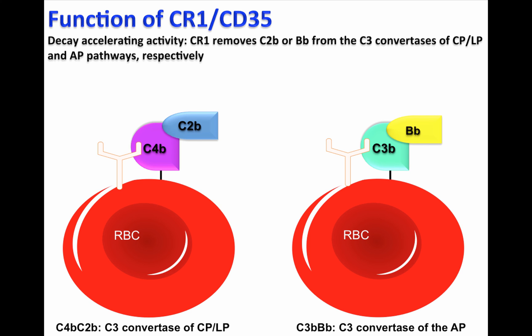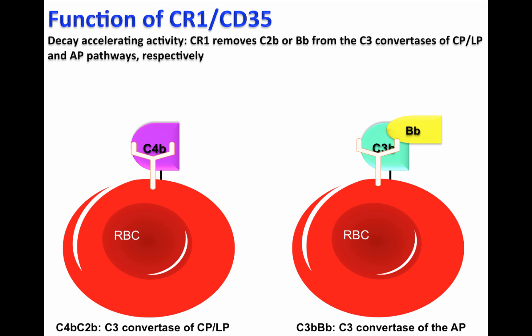If this happens, CR1 will recognize the C3 convertase and remove C2b or Bb from the C3 convertases, which means that CR1 is accelerating the decay of the convertases.